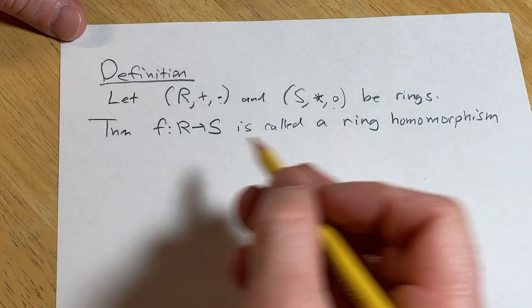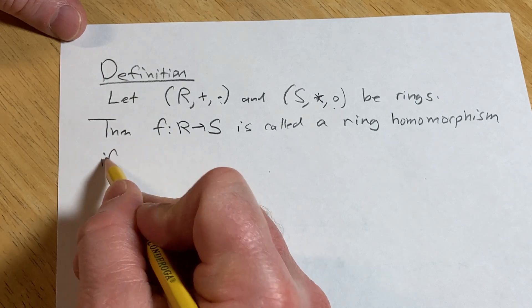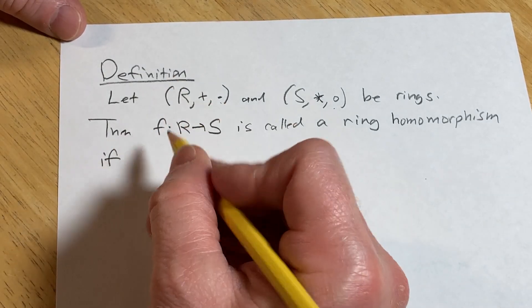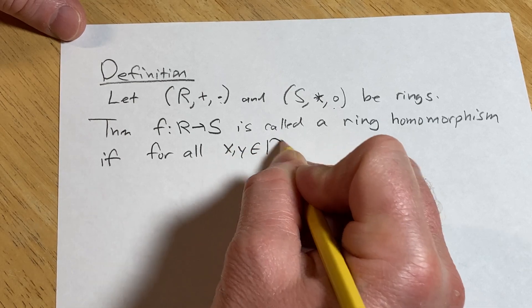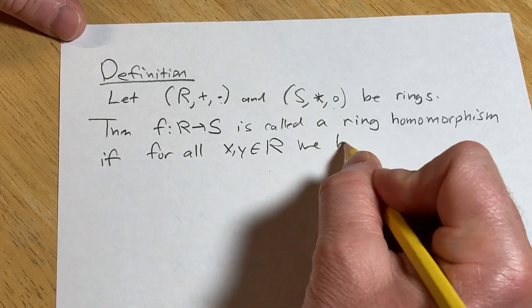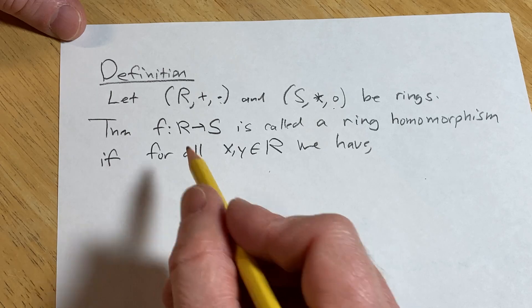It's called a ring homomorphism if, for all x, y, in R, we have the following two equations.